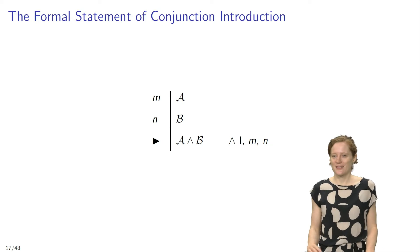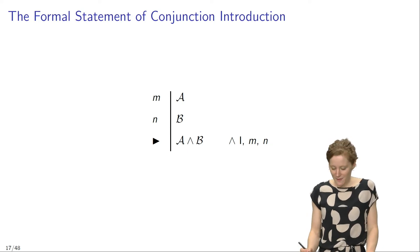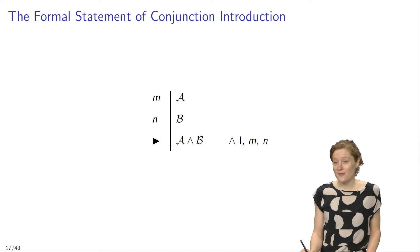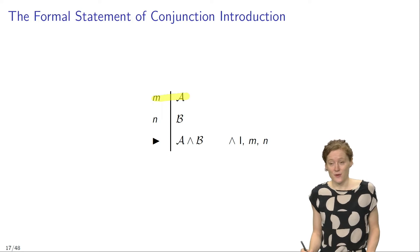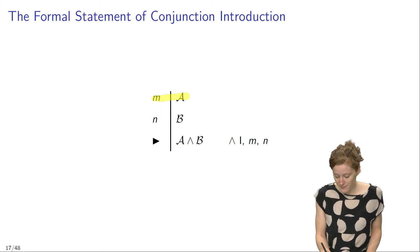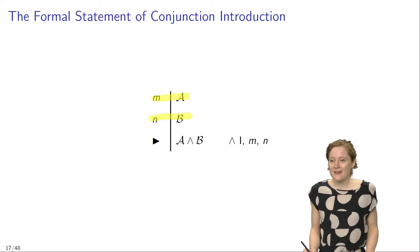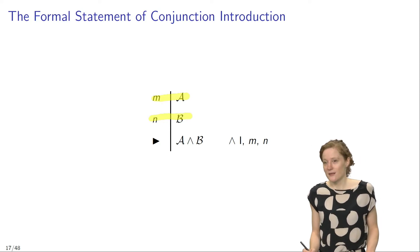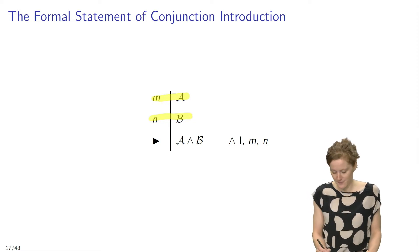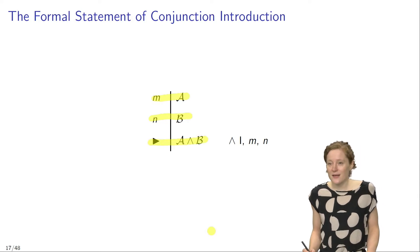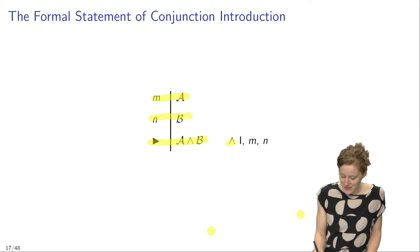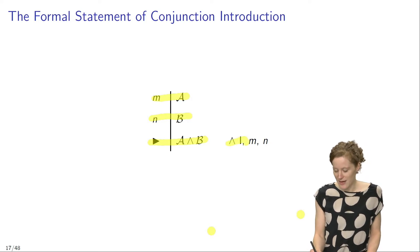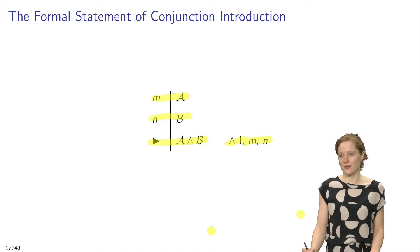Formally, conjunction introduction looks like this. If at some line in your proof you have a sentence of the form A, and if in a different line of your proof you have a sentence of the form B, then you are licensed to infer a conjunction where the first conjunct is a sentence of the form A and the second conjunct is a sentence of the form B. You can justify this inference by citing the inference rule conjunction introduction applied to lines M and N, the two lines to which you have applied it.